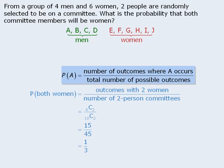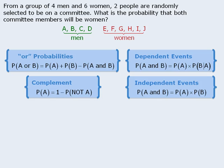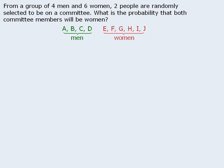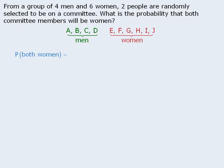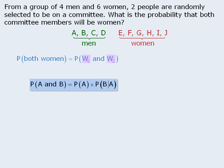For this approach, we used the basic probability formula and counting techniques. But are there other approaches we could take? We could use one or more of the probability formulas. We want to know the probability that both selected people will be women. For this to happen, the first selected person must be a woman and the second selected person must be a woman. Since these two events are dependent, we apply the AND probability formula for dependent events.